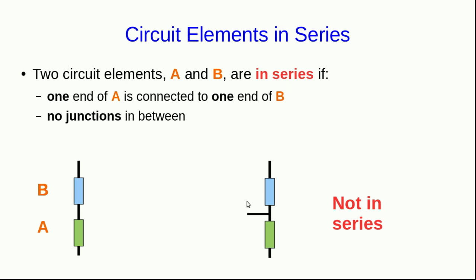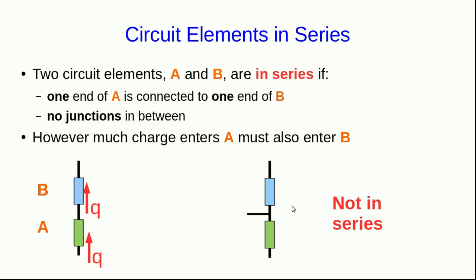And note something about circuit elements in series. Whatever charge enters A here, since it never stops in A, no circuit element ever builds up charge, not even capacitors. Remember, the total charge in a capacitor is always zero. So all that charge has to move on to B. Whereas in the case where they're not in series, the charge that comes into the first element here doesn't necessarily all go into the second element, because some of it could take the path down the other wire at the junction.